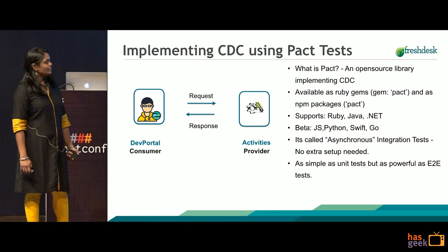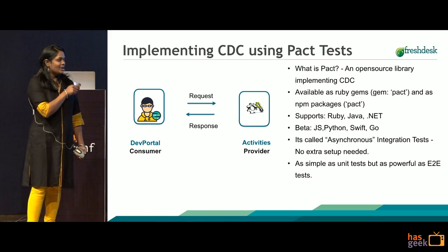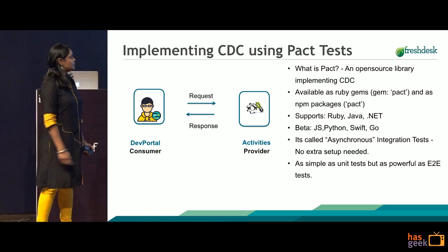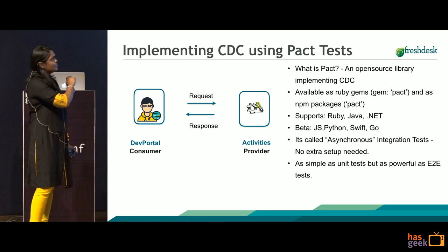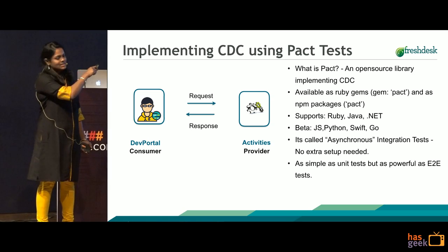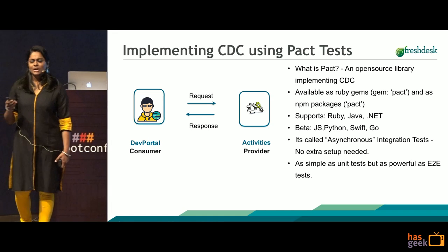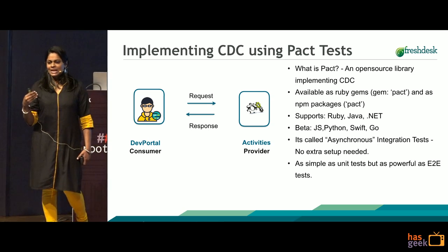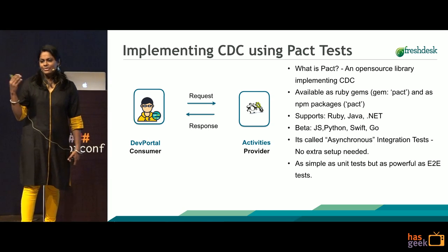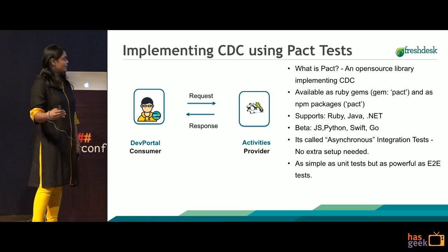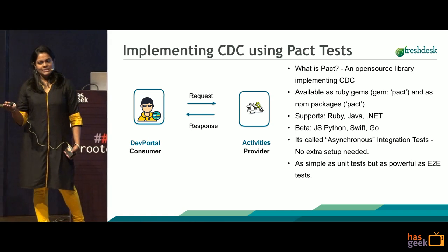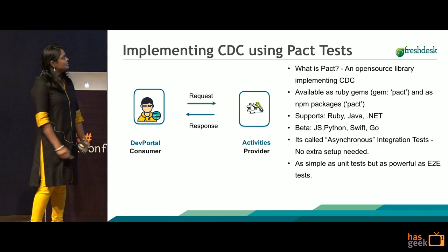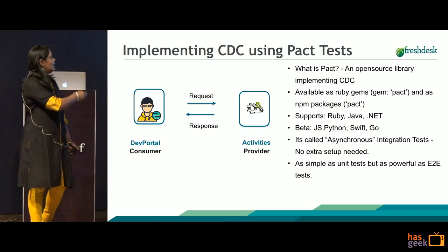Let's first see how it works. As I said, it is as simple as unit tests but as powerful as end-to-end or integration tests. For this talk, I'm going to take two services called the dev portal and the activity service. I work with a team called the marketplace team, which is into building and providing SDKs using which apps can be written. These apps can run on top of Freshdesk. There's a dev portal where developers can submit the app, and the activities service records all the activities that happen in the dev portal. In this example, activities is the provider and dev portal is the consumer.